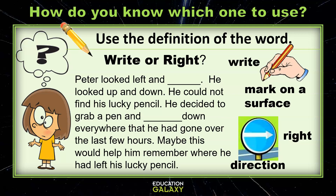Peter looked left and right. He looked up and down. He could not find his lucky pencil. He decided to grab a pen and write down everywhere that he had gone over the last few hours. Maybe this would help him remember where he had left his lucky pencil.